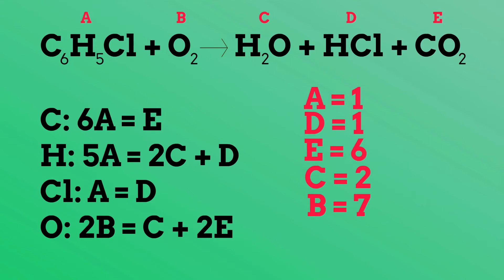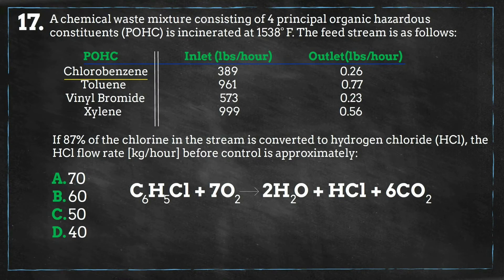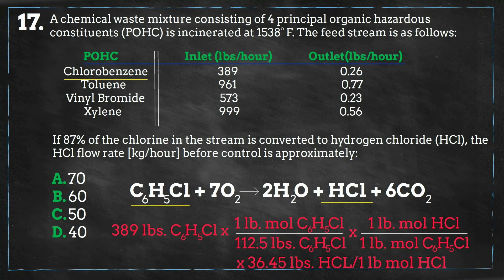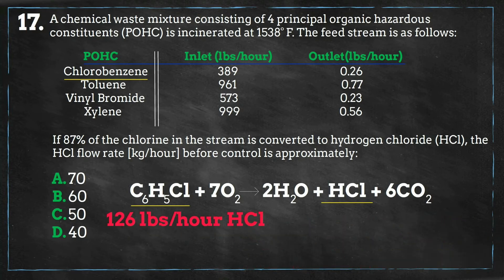If you do this for other combustion equations and your numbers are not whole, simply multiply them by the least common multiple until you have all whole numbers. We can now place the variables in front of the constituents as coefficients. Now that we have our equation balanced, we see that one mole of hydrogen chloride is produced for every one mole of chlorobenzene in the feed stream. A quick calculation gives us 126 pounds per hour of HCl in the feed stream.